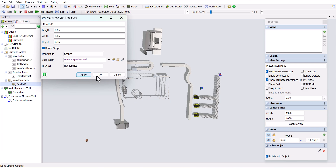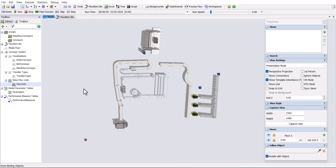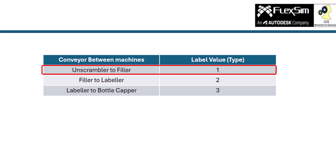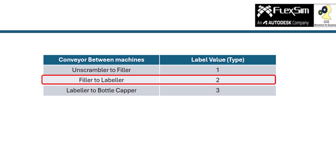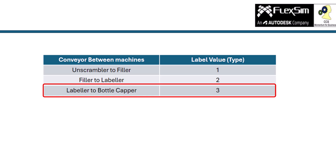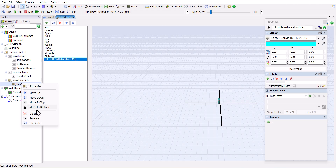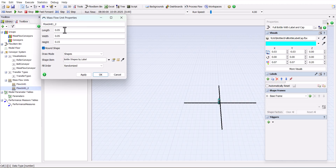Now we have to add the label for the conveyors. As shown in the table, add a label name type and put the value as mentioned in the table. From unscrambler to filler, type 1. From filler to labeler, type 2. From labeler to capper machine, type 3. After the label has been created on the conveyor, add one more flow unit, then select the shape, and in the fill order, select length and width.